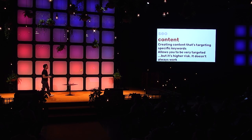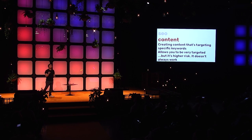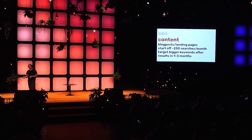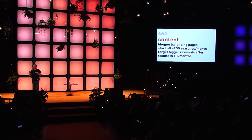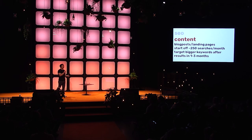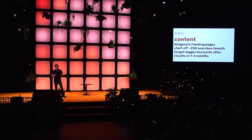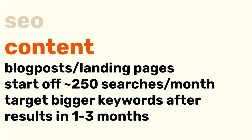Moving on to content. With content, you get to be very targeted on the keywords you want to rank for. If you're a skincare company, you can write a page for a skincare routine and target specific keywords. But it's really high risk because it doesn't always work and you're putting a lot of effort into very high quality content. The general rule of thumb: start with blog posts and landing pages, targeting keywords with about 250 searches a month, because the competition is lower and lower-volume keywords typically have higher user intent and will convert more. Once that's going, target bigger keywords — 1,000 plus. For all SEO results, you should see them in about one to three months.